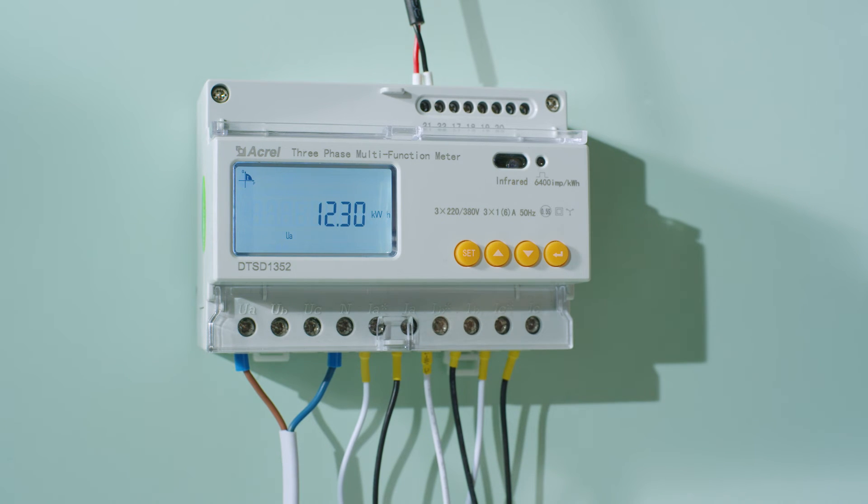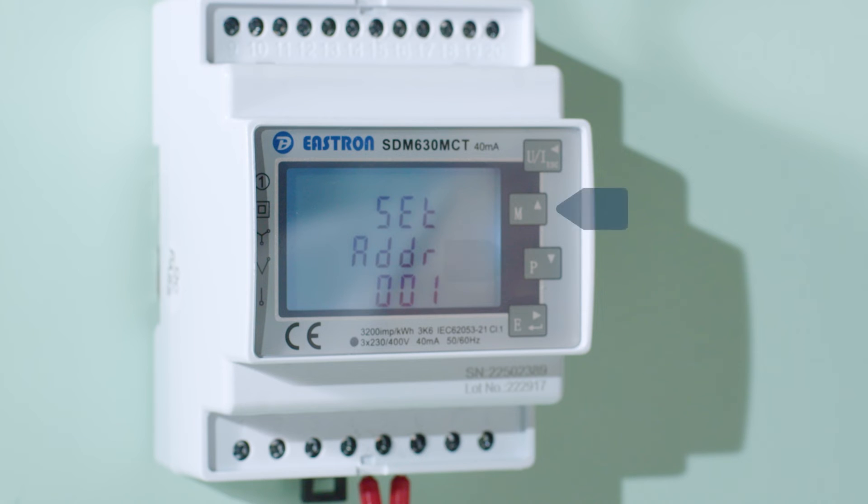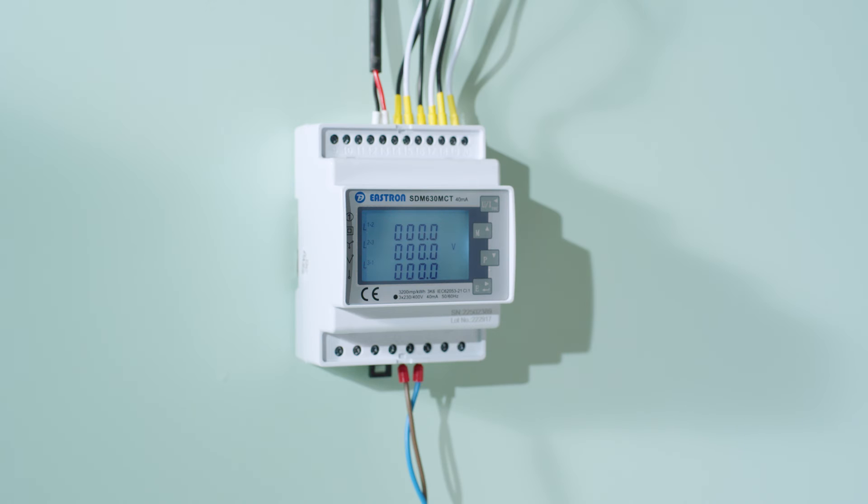For Eastron models, hold the button until the display shows the PASS interface. Use the arrow buttons to enter the code 100. Hold the button until the setting menu appears. Use the arrow up and arrow down buttons to scroll through the different options in the setup menu. Please note that the up and down arrows give different results. The CT setting is for setting the CT ratio of the current transformer that is connected to the meter. For this model, the secondary CT value (CT2) is fixed to 40 milliamps.